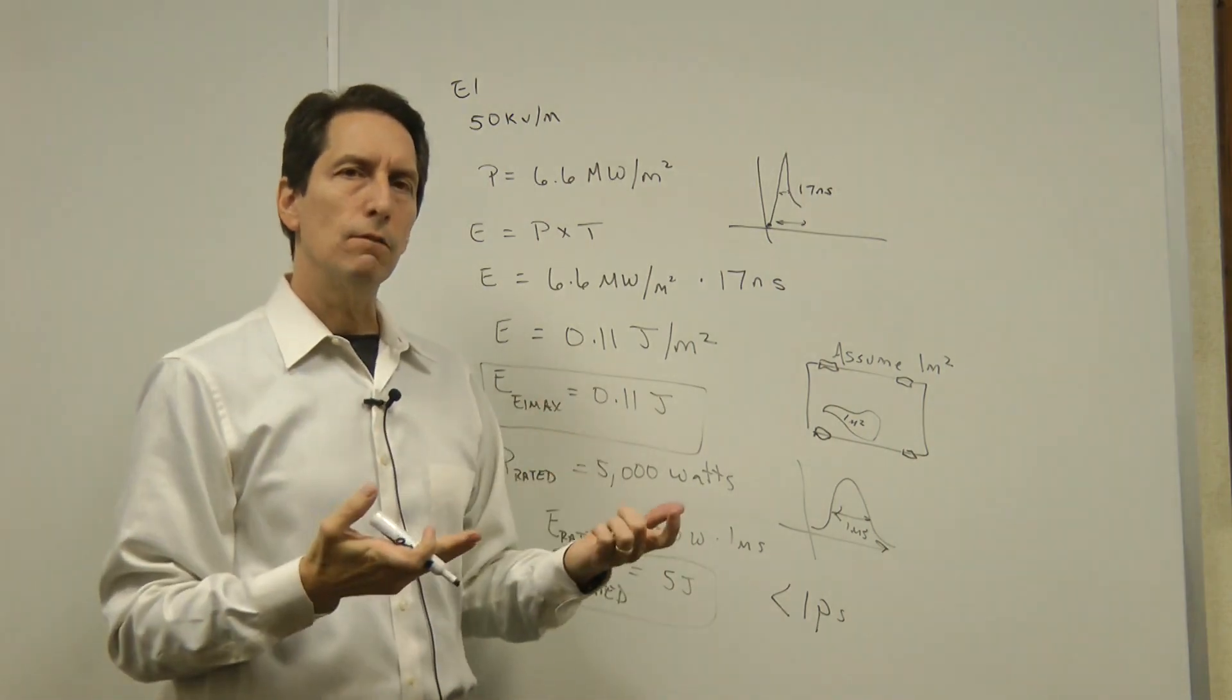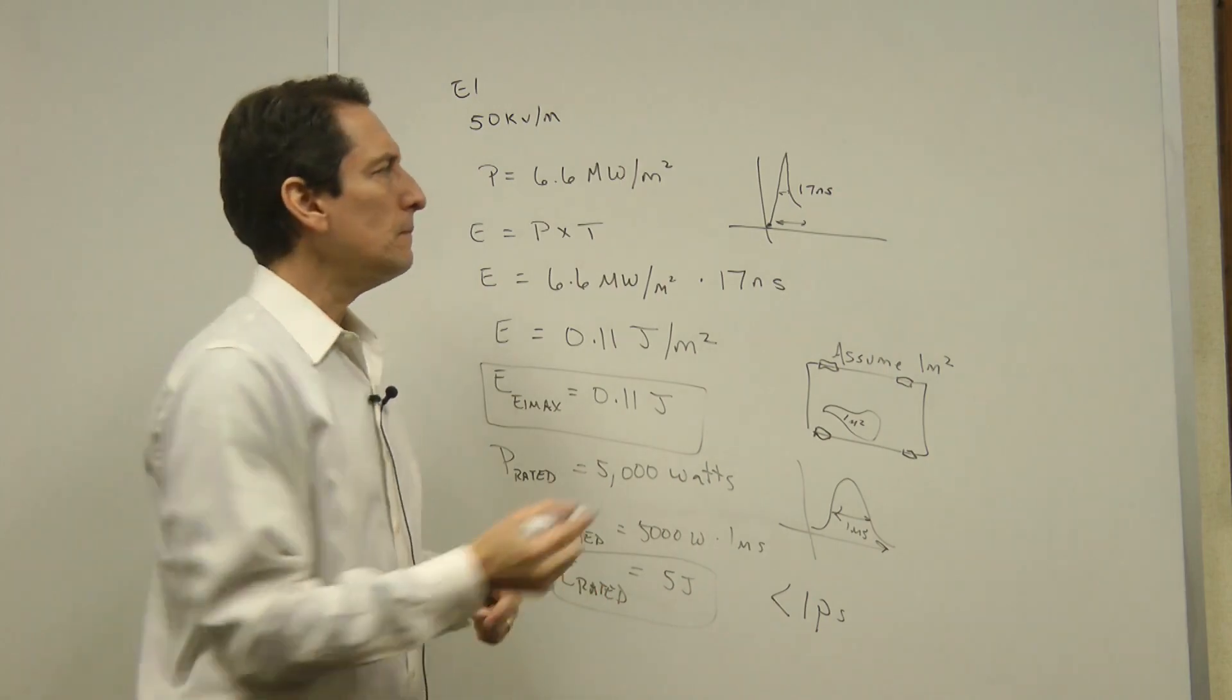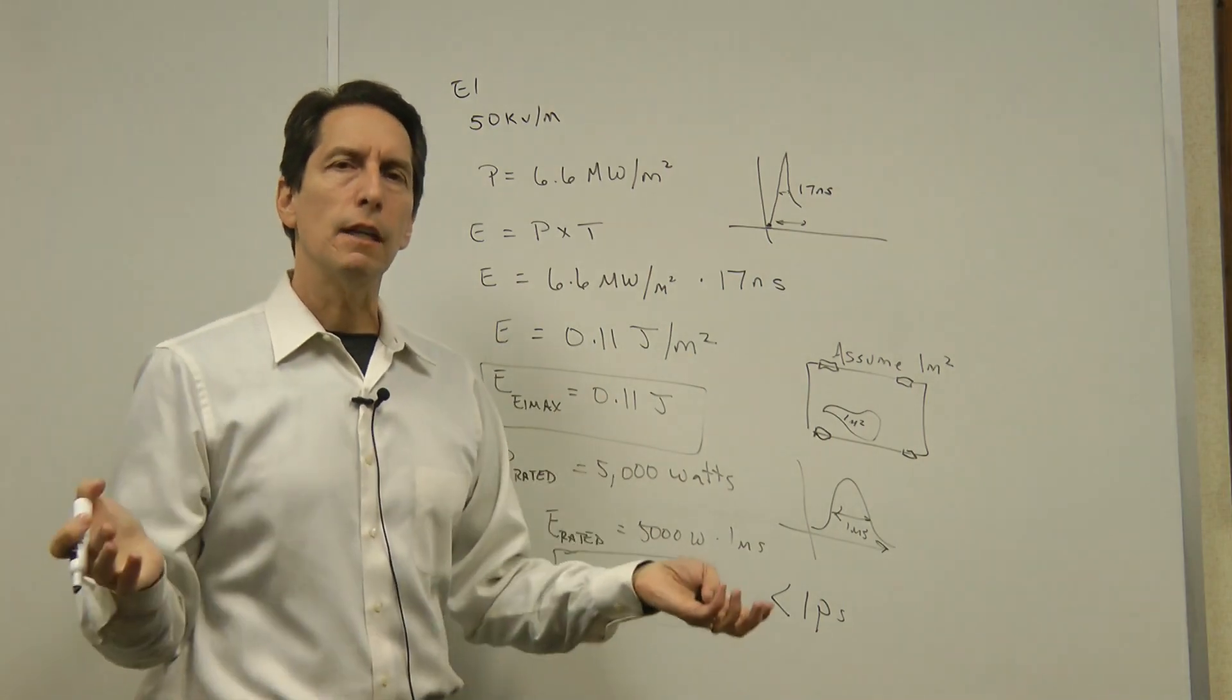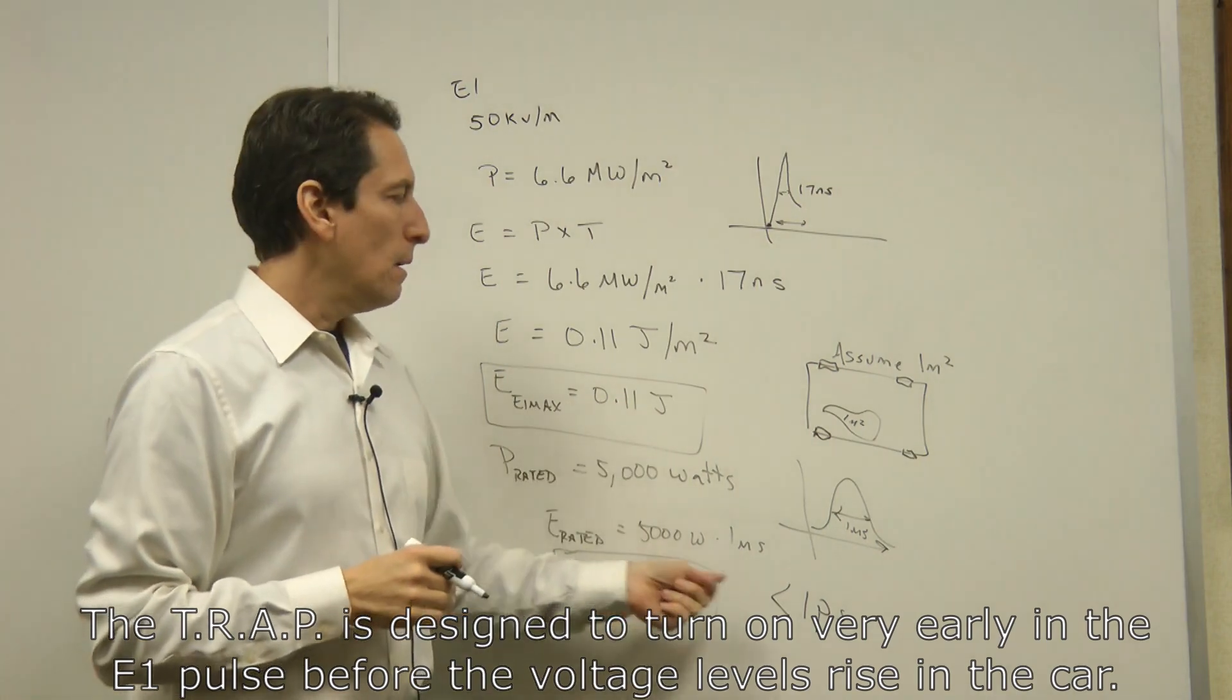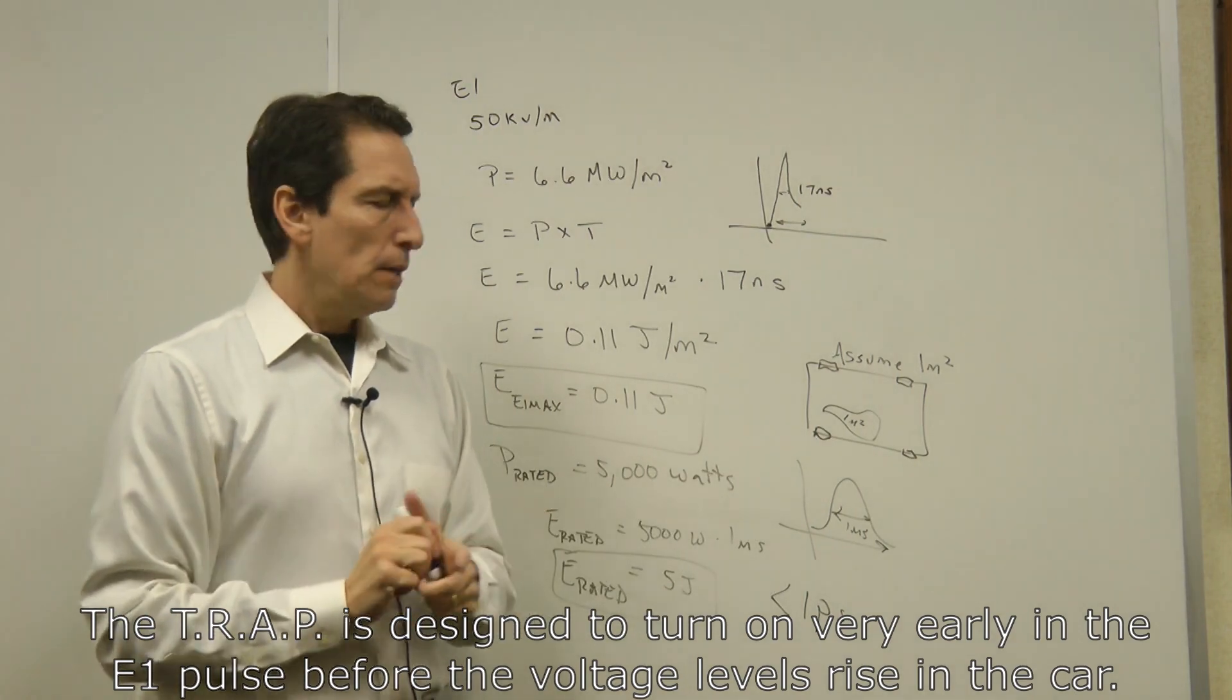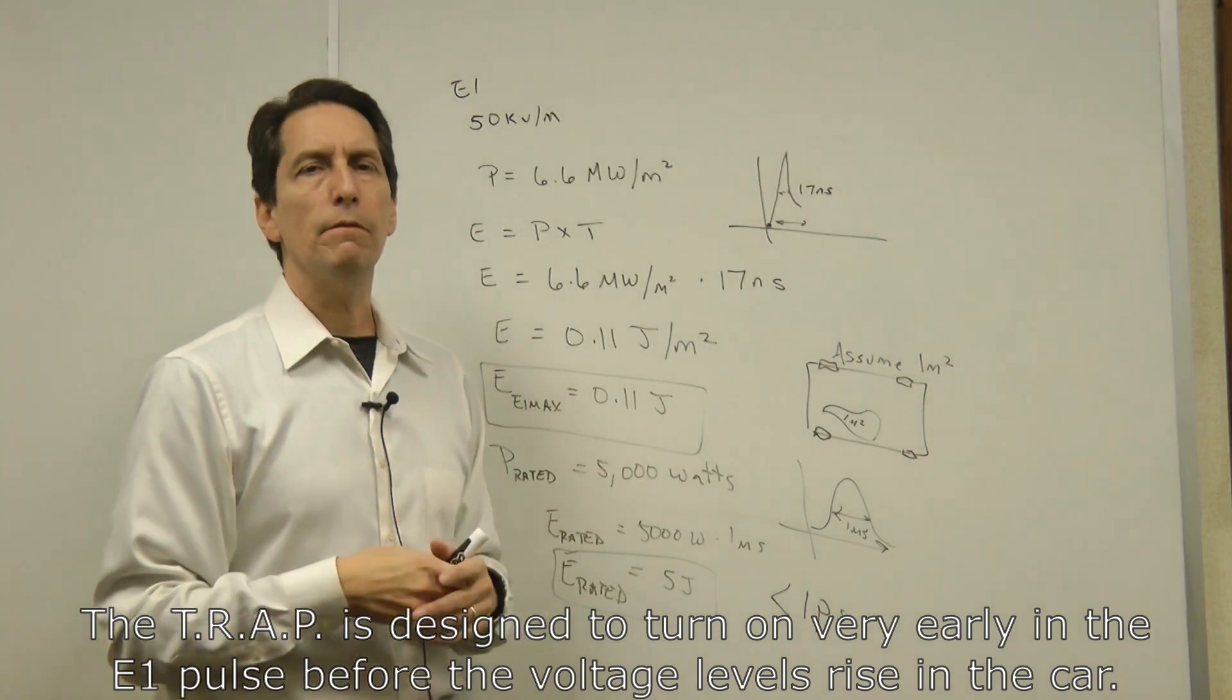So it has to turn on very early in this E1 pulse before the levels have gotten too high. Now fortunately, the part that I selected for the trap products turns on in less than one picosecond. That means it turns on way early in this, way before the field levels get high enough and the voltage levels get high enough to cause damage. So it not only takes the energy that's required, probably more importantly, it turns on fast enough to allow it to absorb that energy.